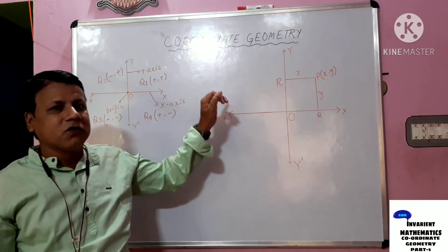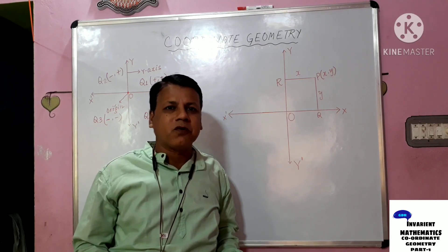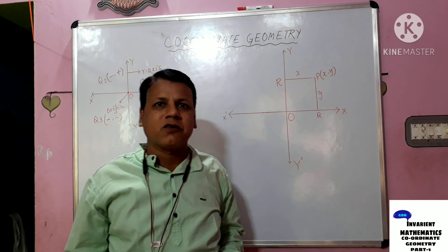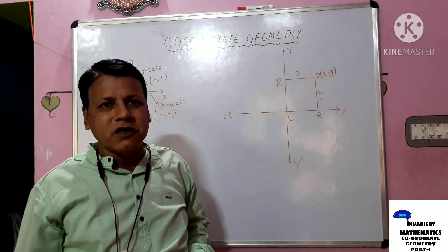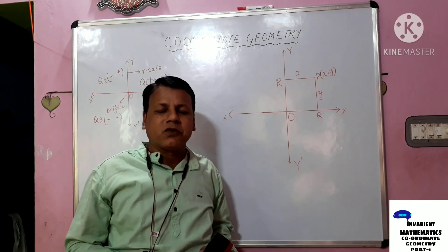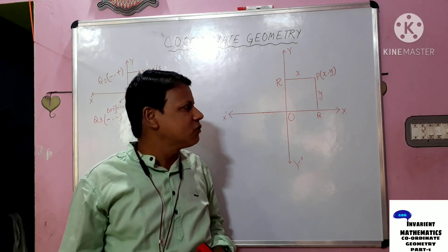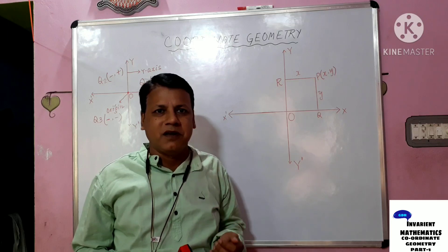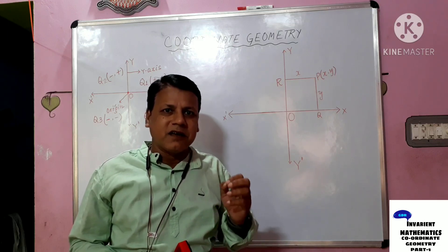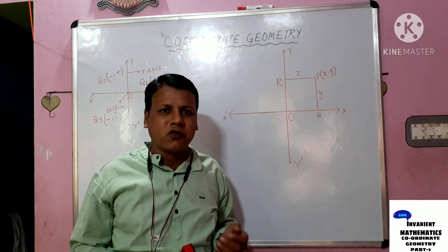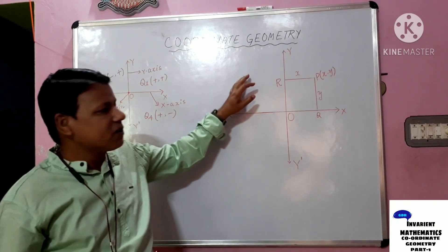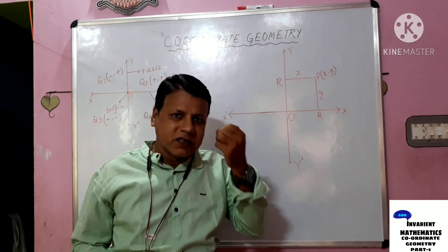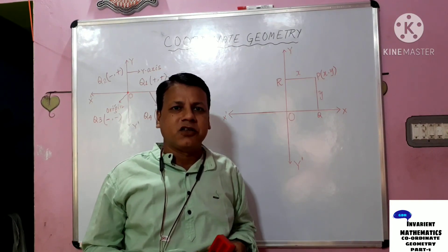We will start the topic on coordinate geometry. Before going to start the topic, I would like to say that in the revised syllabus according to the new academic session 2021, you will meet only the distance formula and the division formula or section formula — that means the area of triangles is not in your syllabus. So in this chapter, we meet only two formulas: the distance formula and the section formula.